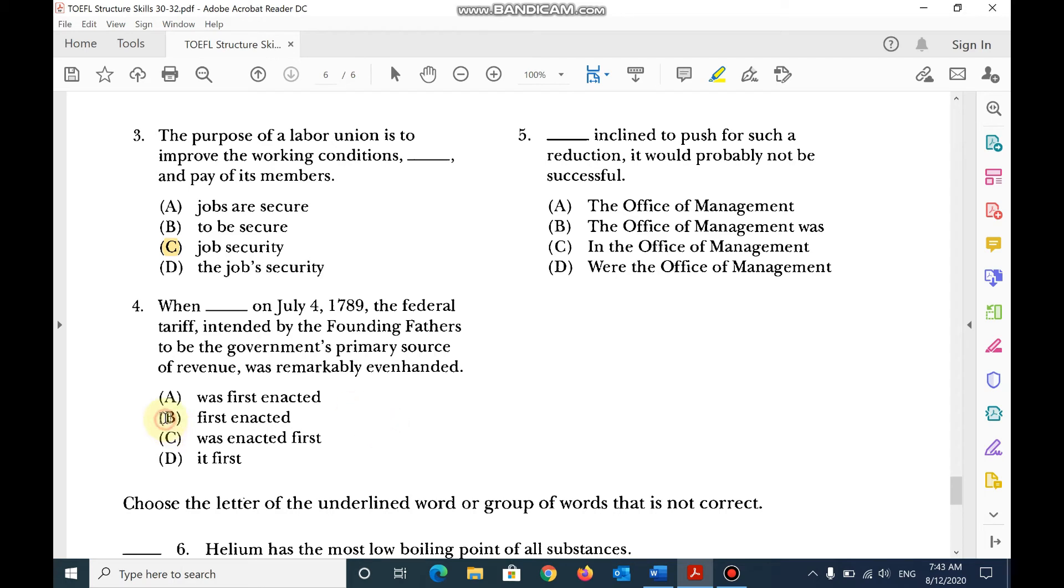Number 4, when first enacted on July the 4th, 1789, the federal tariff intended by the founding fathers to be the government's primary source of revenue was remarkably even-handed.